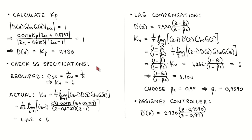We have designed a proportional controller that satisfies the transient requirements. Let's check if the steady state specifications are also met. The steady state error in response to a unit ramp input should be 1 over 6, which means that the velocity error constant should be 6. The actual velocity error constant is calculated as 1 divided by T times the limit as z tends to 1 of z minus 1 times the controller transfer function times the discrete equivalent plant transfer function. This results in a value of 1.46, which is less than 6, which means that the steady state requirement is not met.